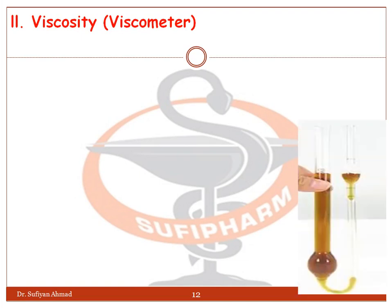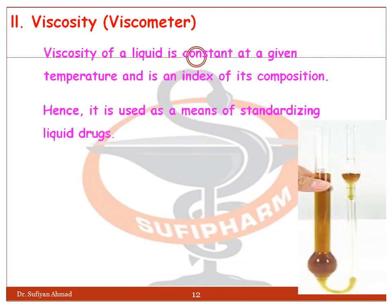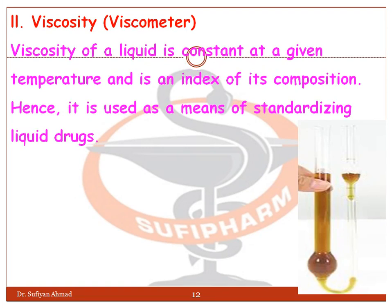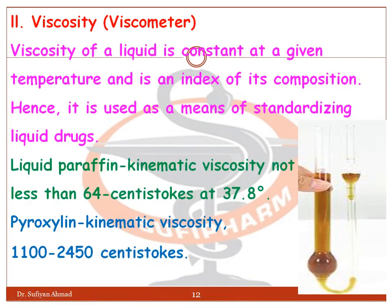The next parameter is viscosity, which can be determined using a viscometer. The viscosity of a liquid is constant at a given temperature and is an index of its composition; hence it is used as a means of standardizing liquid drugs. For example, liquid paraffin has a kinematic viscosity of not less than 64 centistokes at 37.8°C.